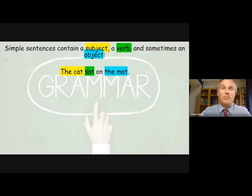Returning back to our most simple of simple sentences, we have the cat is our subject here. What's it doing? It's sitting, it's sat. And where is it sitting? It's on the mat. So the object is what the noun, the cat, is acting upon.